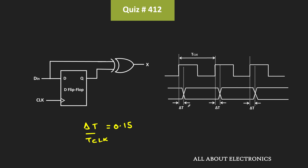That means the data signal is delayed by 15% with respect to the clock signal. At every clock transition, this data signal can be either 0 or 1, and the probability of transition of this data signal is equal to 0.3. If this probability is equal to 100%, it means that after every clock, the data signal will see a transition. On the other hand, if this probability is equal to 0, it means there will be no transition in the data signal.